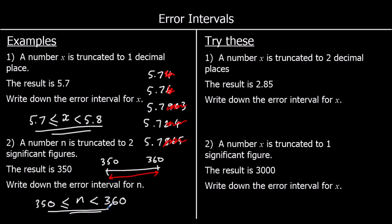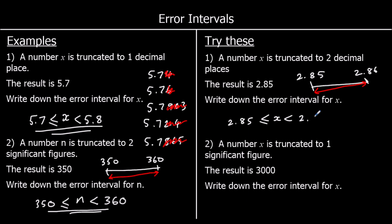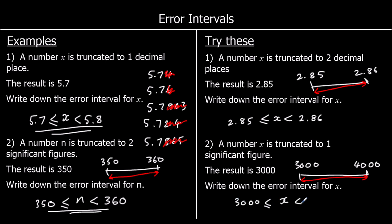Okay, two for you to try. A number x is truncated to two decimal places and the result is 2.85. The next one up is 2.86, so it can equal 2.85 but it can't equal 2.86. The second one: a number x is truncated to one significant figure, the result is 3000. The next one up would be 4000, so it's anything in the range 3000 to 4000 — it can equal 3000 but it can't equal 4000.